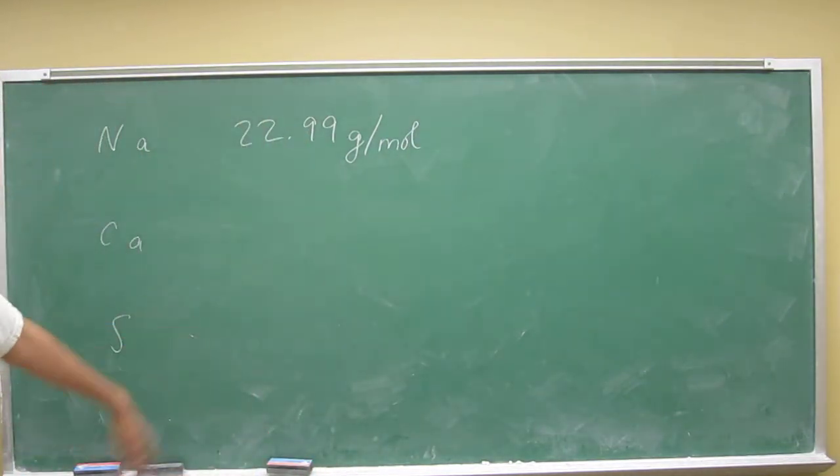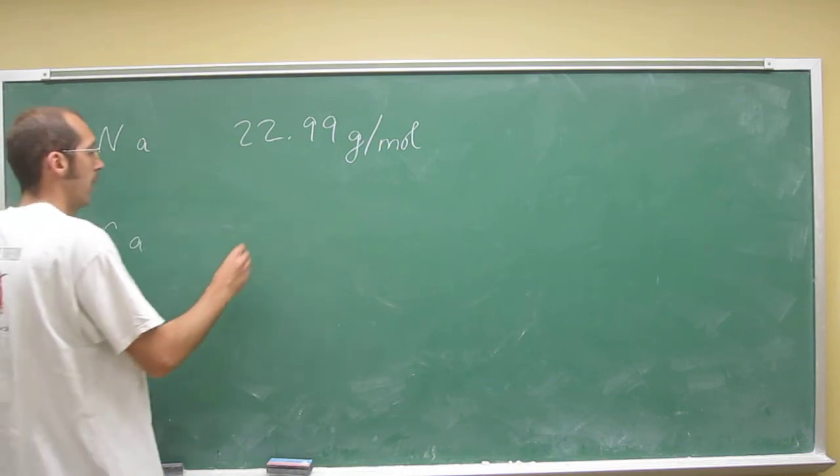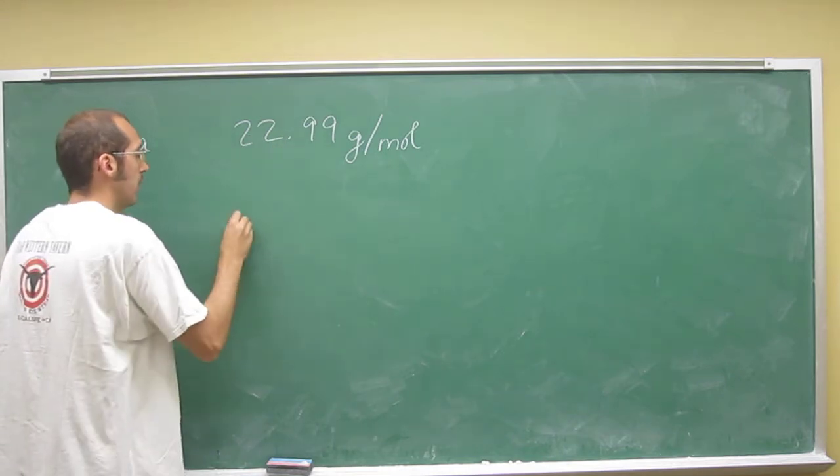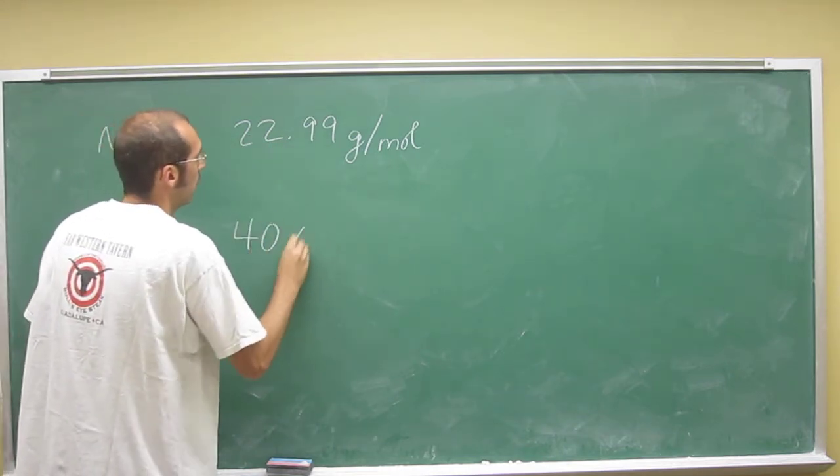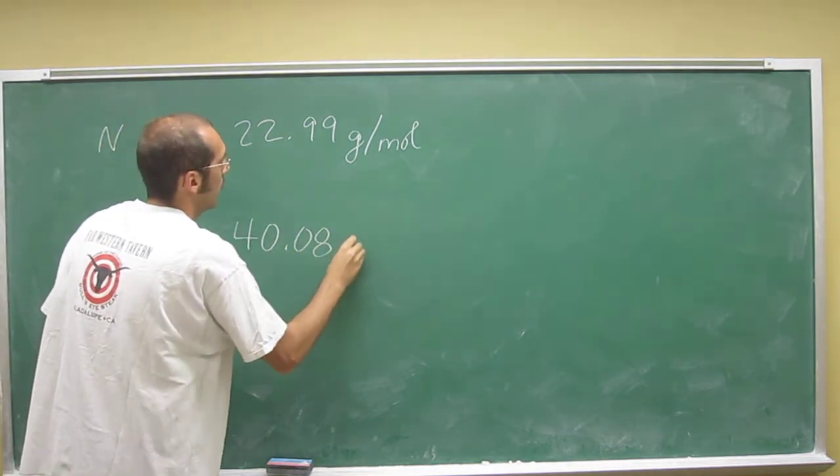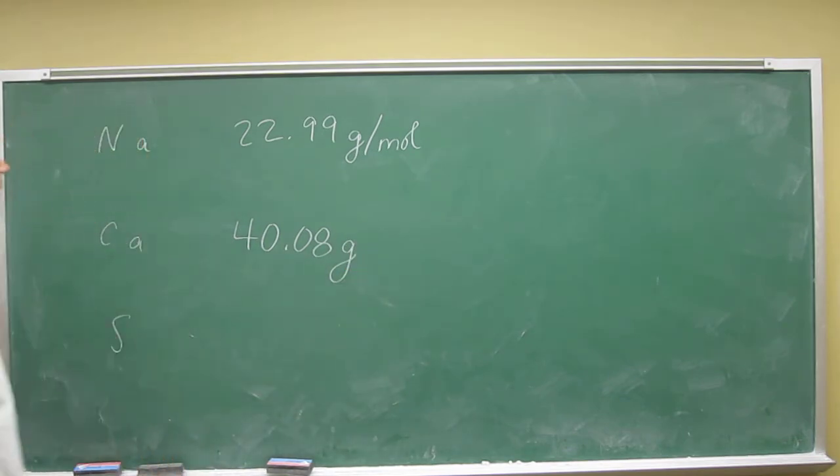What about calcium? What's that going to weigh in grams per mole? Well, its atomic weight is 40.08, so it's going to weigh 40.08 grams for every one mole of calcium.